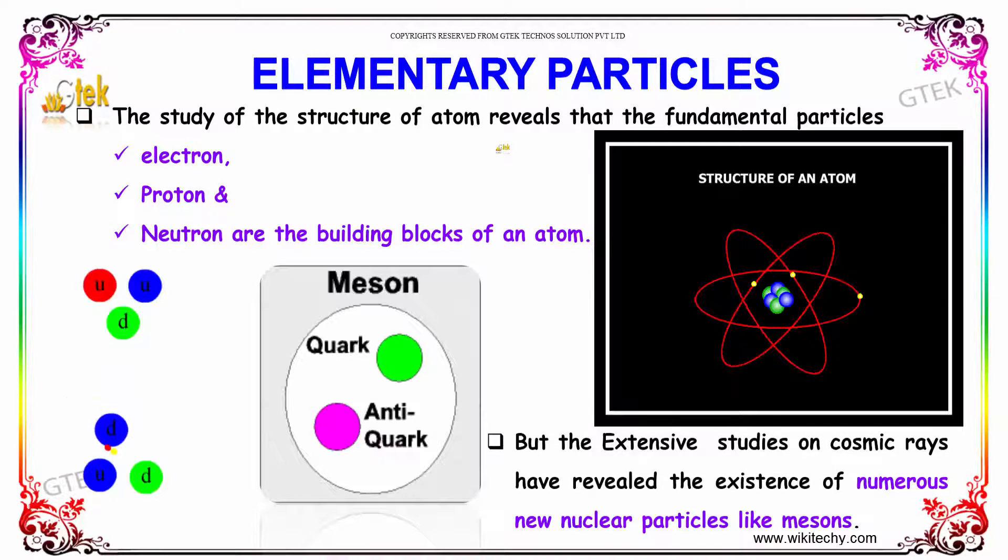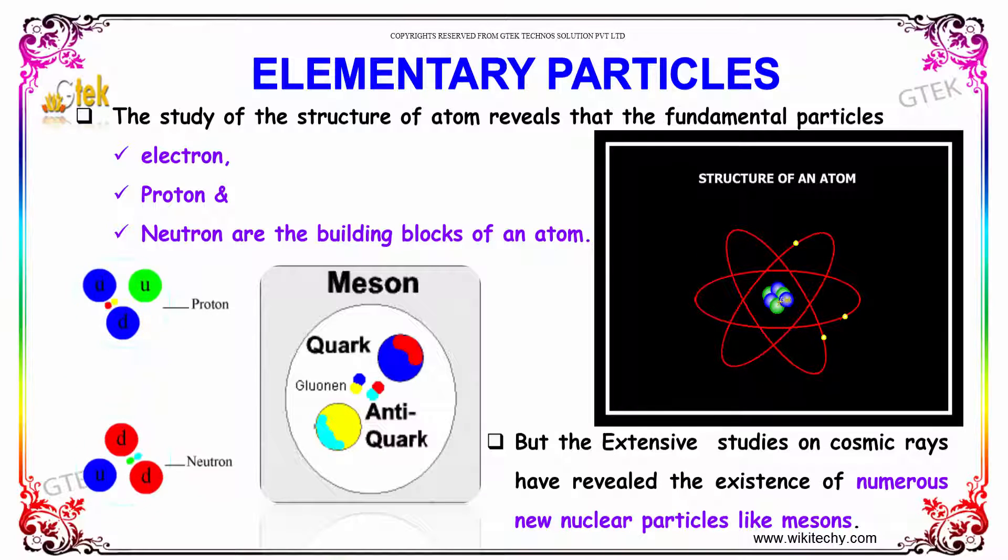The study of the structure of atoms reveals that the fundamental particles are the electrons, which revolve around the protons and neutrons, which are considered the building blocks of an atom. But the extended studies on cosmic rays have revealed the existence of numerous new nuclear particles like mesons.